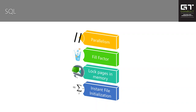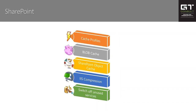This slide deck will be made available publicly, so all the notes will have links on how to switch these settings on. That brings us to SharePoint itself. SharePoint has a few areas that can be optimized: mainly caching, some compression, and services. If we look at the biggest performance improvements for SharePoint, it's all about caching — cache profiles, blob cache, and the SharePoint object cache.